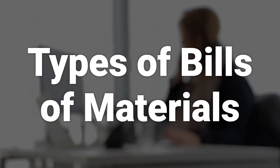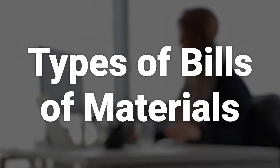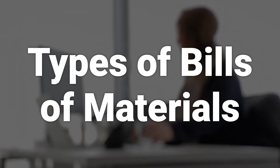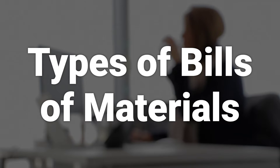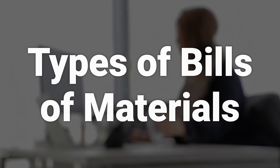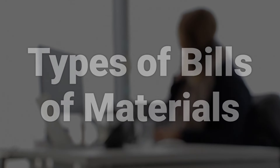There are two main types of Bills of Materials: Engineering BOMs and Manufacturing BOMs. Engineering BOMs define the design of the finished product, while Manufacturing BOMs include all the parts and assemblies required to construct the finished item.